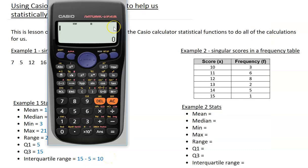Moving on to the second example, I need to change the setting in my calculator to use a frequency table. So to do that I press shift mode, I press the down arrow, I select option 3, stat, and I turn the frequency table on.